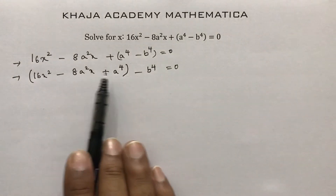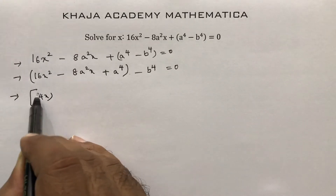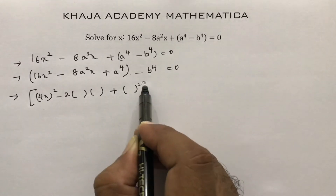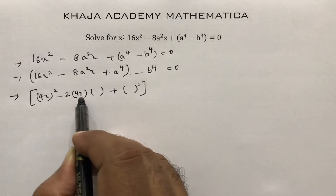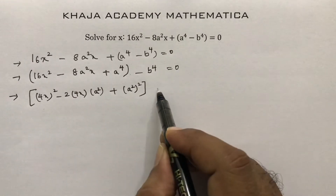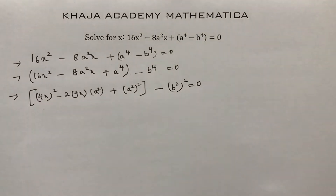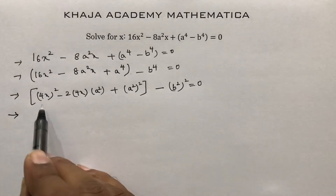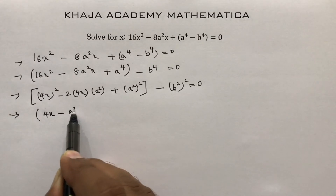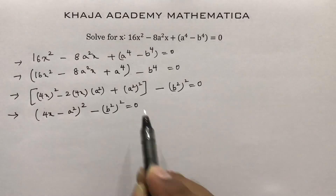The bracketed part is in the form a² - 2ab + b². Write 16x² as (4x)² and a⁴ as (a²)². Then here a = 4x and b = a², giving (4x - a²)² - (b²)² = 0.